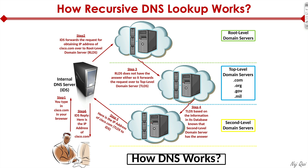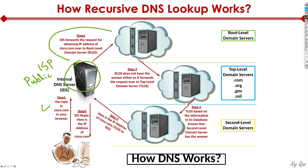Now let's zoom out and see what the DNS server did for us. Bob types cisco.com in the browser and it goes to the internal DNS server — for most people that's their ISP server, or a public DNS server like Cloudflare, Cisco, or Google. If that server already has the answer cached, it will immediately respond. Also, if your PC already has cisco.com cached in the browser, it won't even bother going to the DNS server. This process only happens when there's no entry in the local database, so the machine goes to the DNS server.